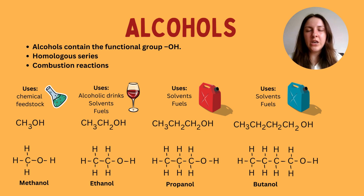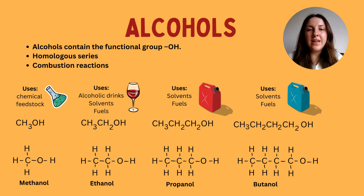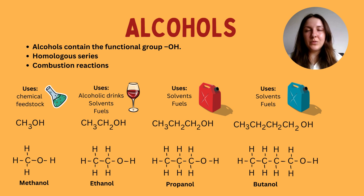You also need to know some of the uses. Methanol, with just one carbon, is used as a chemical feedstock — it's used in industry for other industrial processes. Ethanol is found in alcoholic drinks but can also be used as a fuel and as a solvent. Butanol and propanol can also be used as solvents and fuels. Ethanol is one you may have used in science lessons to test for lipids, where it turns cloudy, and it can be used to clean surfaces.